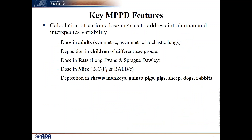What are the key features of MPPD? It calculates various dose metrics. In human adults, it calculates dose in symmetric and asymmetric geometry. In children, it calculates deposition for different ages. It calculates dose in rats — two strains — and in mice for B6 strains. It also covers rhesus monkey, guinea pigs, pigs, sheep, dogs, and rabbits, with some species models still being implemented.